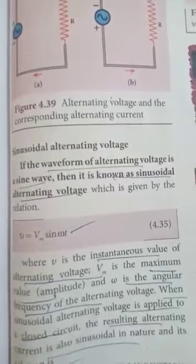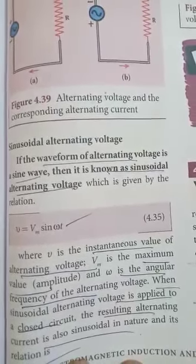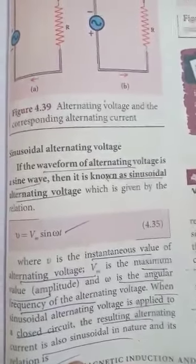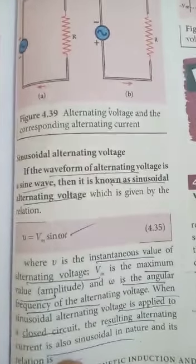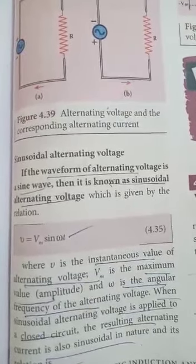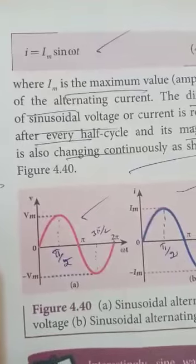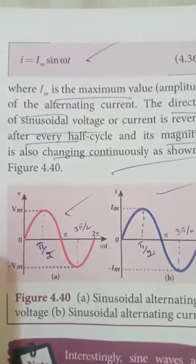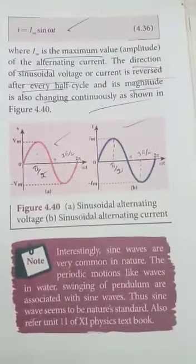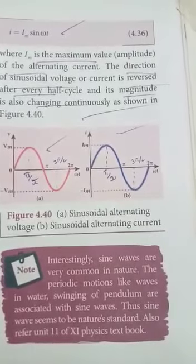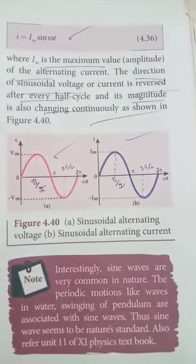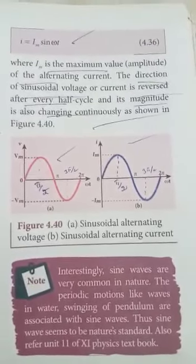When sinusoidal voltage is applied to a closed circuit, the resulting alternating current is also sinusoidal. If the alternating voltage is in the form of a sinusoid, the resulting alternating current is given by I = Im sin ωt, where Im is the maximum value of the alternating current. The direction of the sinusoidal voltage or current is reversed after every half cycle — meaning each half cycle, voltage and current are reversed.